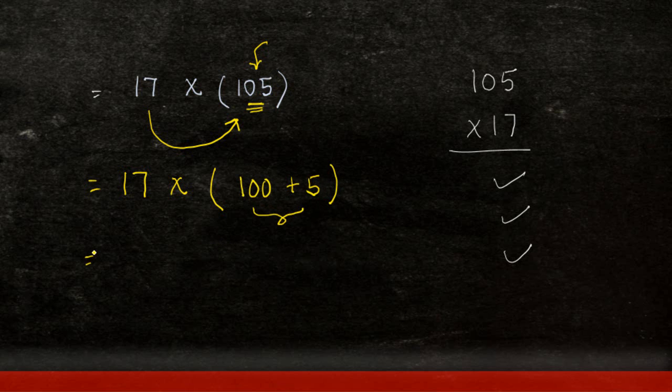Now, what the distributive property of multiplication over addition of whole numbers implies is that whenever we multiply two numbers, let's say a times b plus c. In this case, a is what? 17. b is what? 100. c is 5.